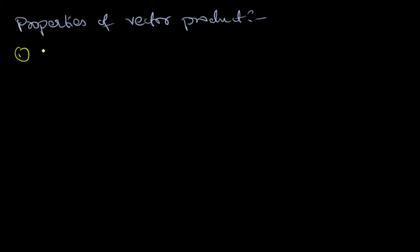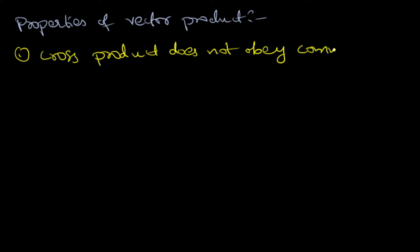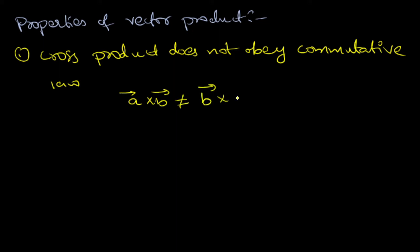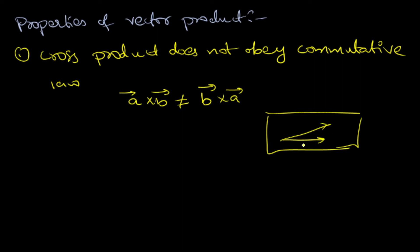The first property: the cross product does not obey the commutative law. That is, A-bar cross B-bar will not be equal to B-bar cross A-bar. For example, consider a plane containing vectors A-bar and B-bar, where vector C-bar is perpendicular to this plane and θ is the angle between the two vectors.